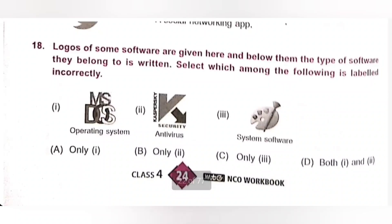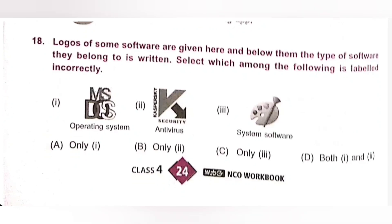18. Logos of some software are given, and below them the type of software they belong to is written. Select which is labelled incorrectly. 1. MS-DOS — operating system: correct. 2. Antivirus: correct. 3. Labelled as system software, but the given logo is of MS Paint, which is an application software — so 3 is incorrectly labelled. Option C is the correct answer.